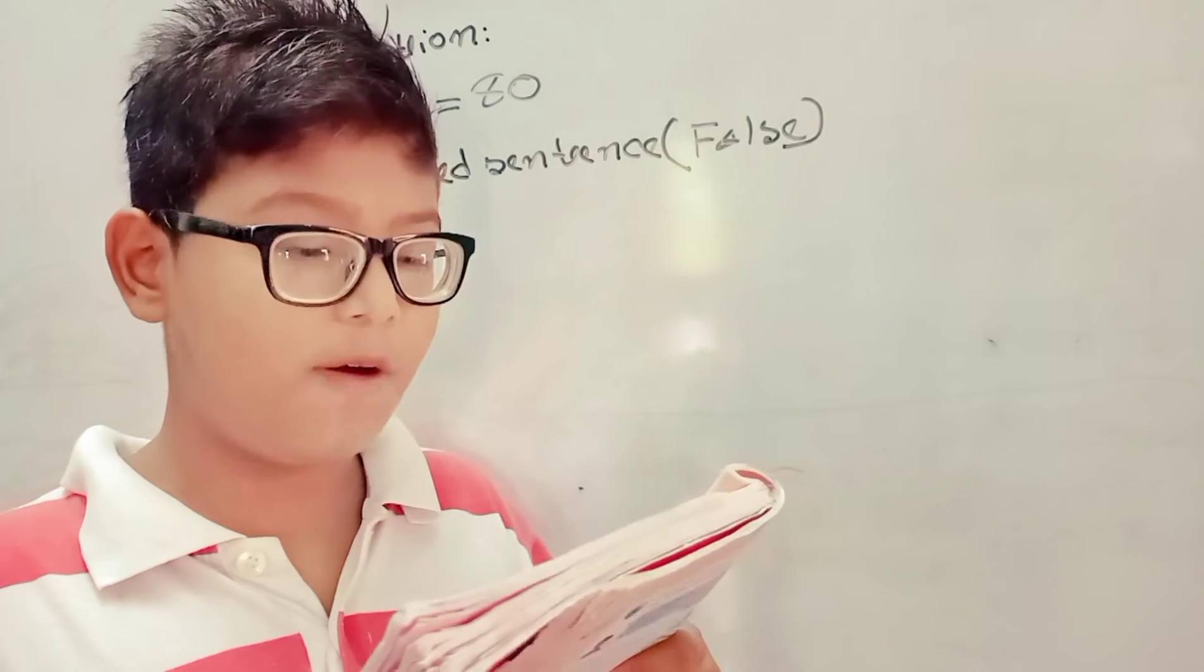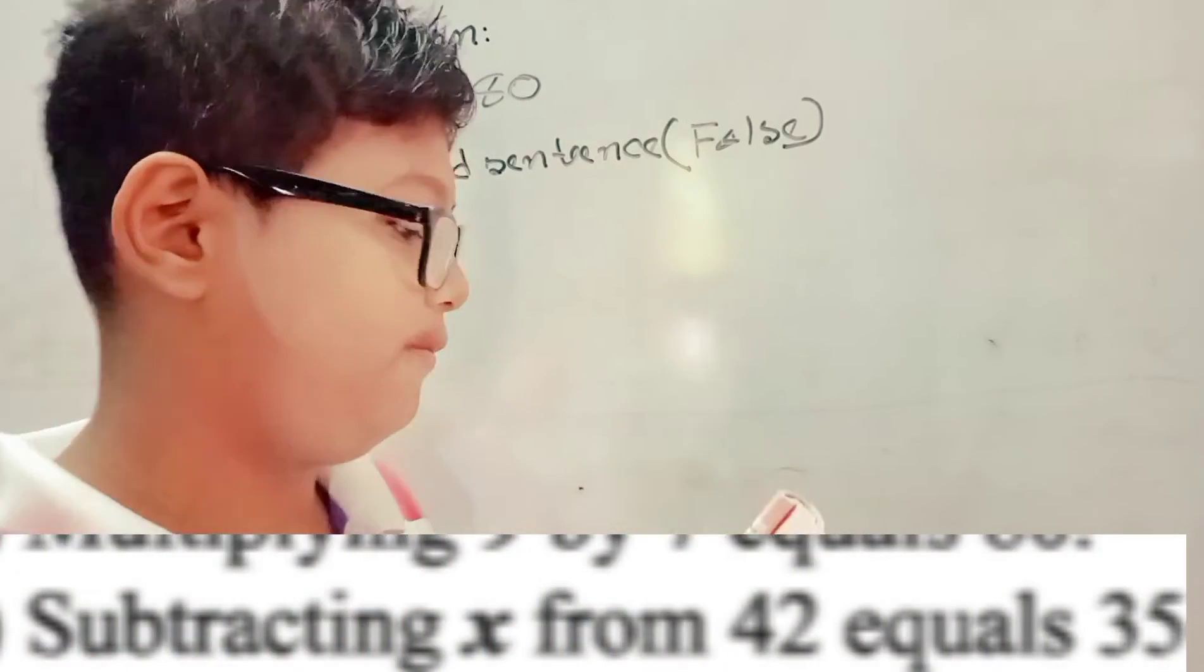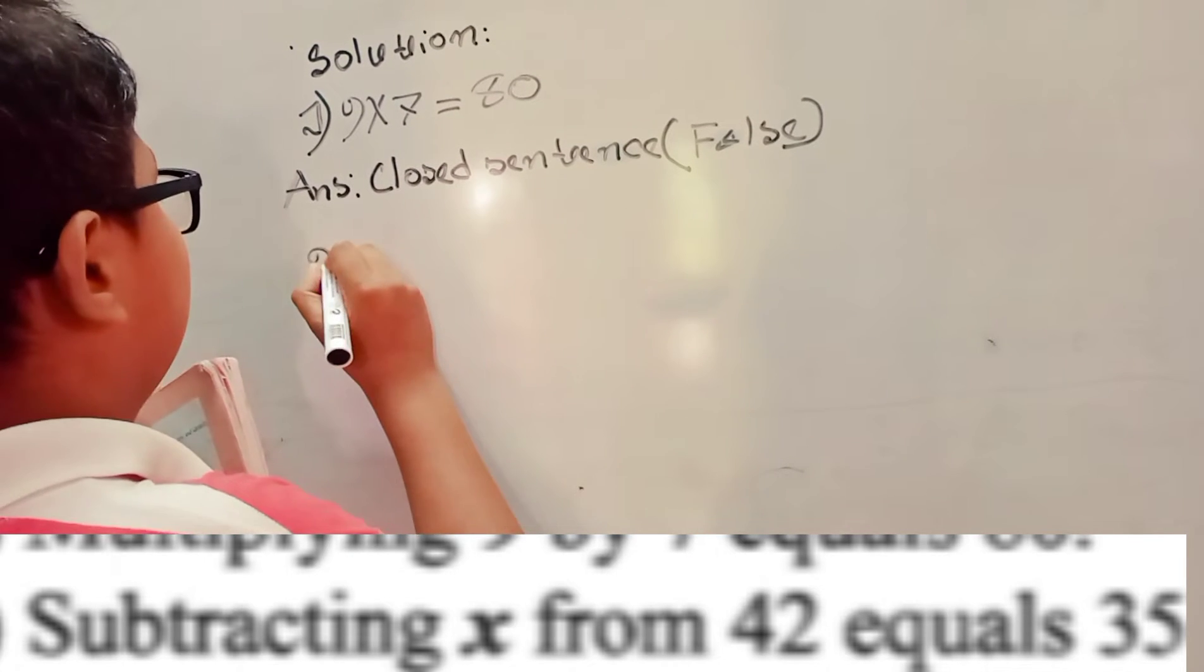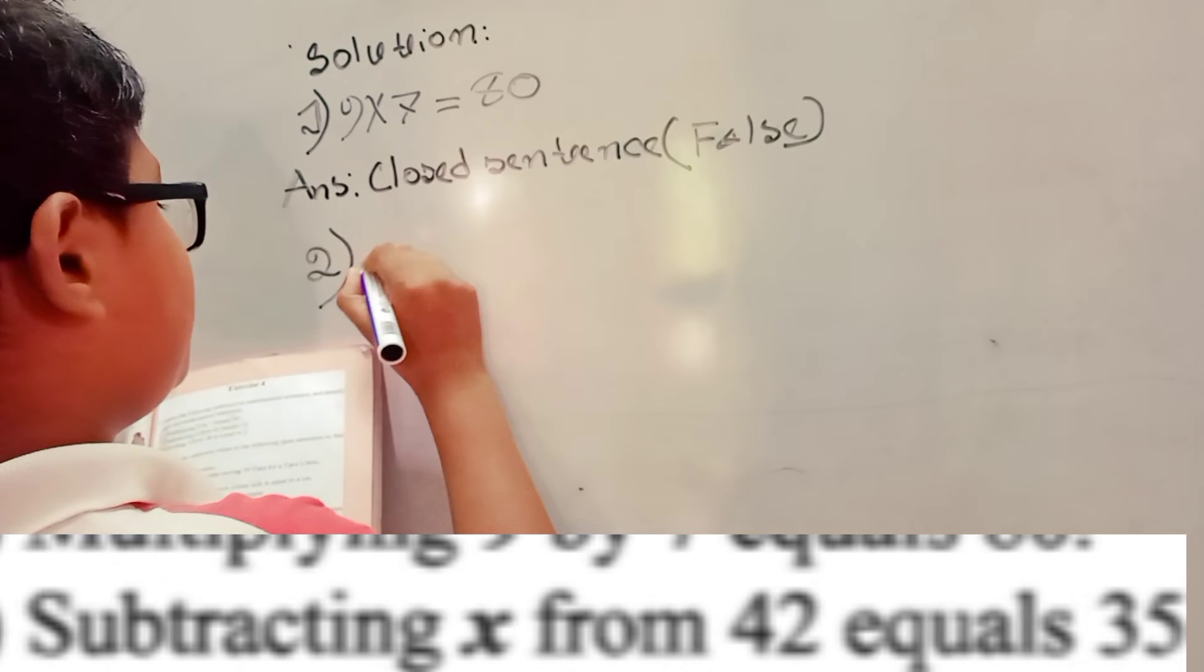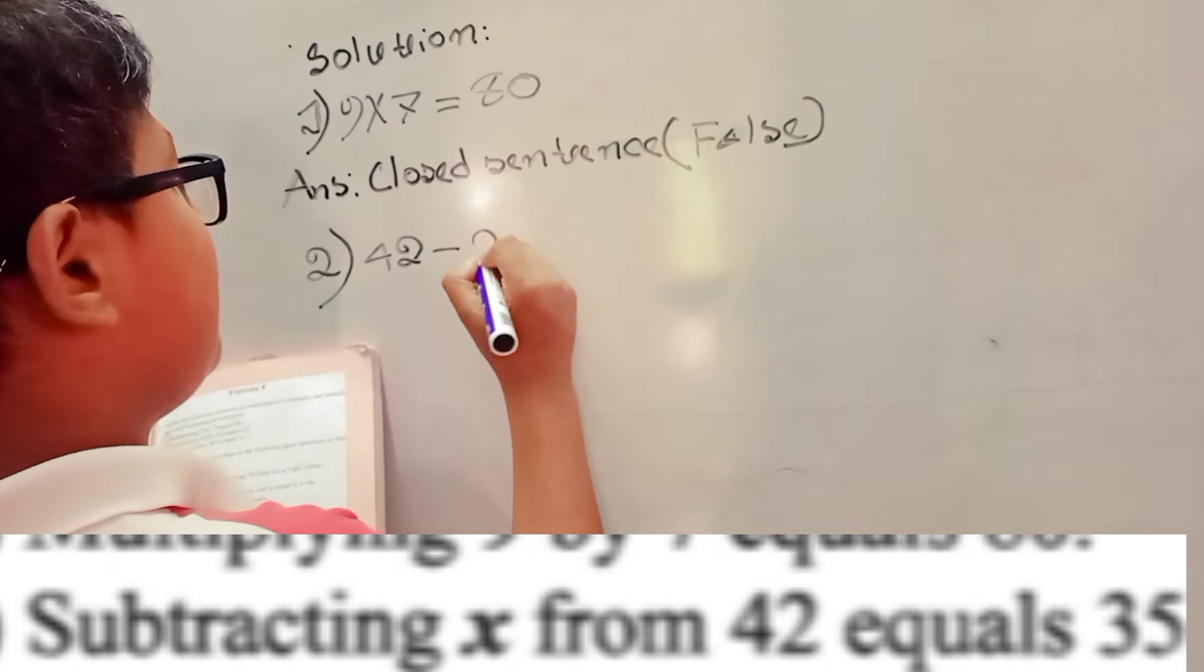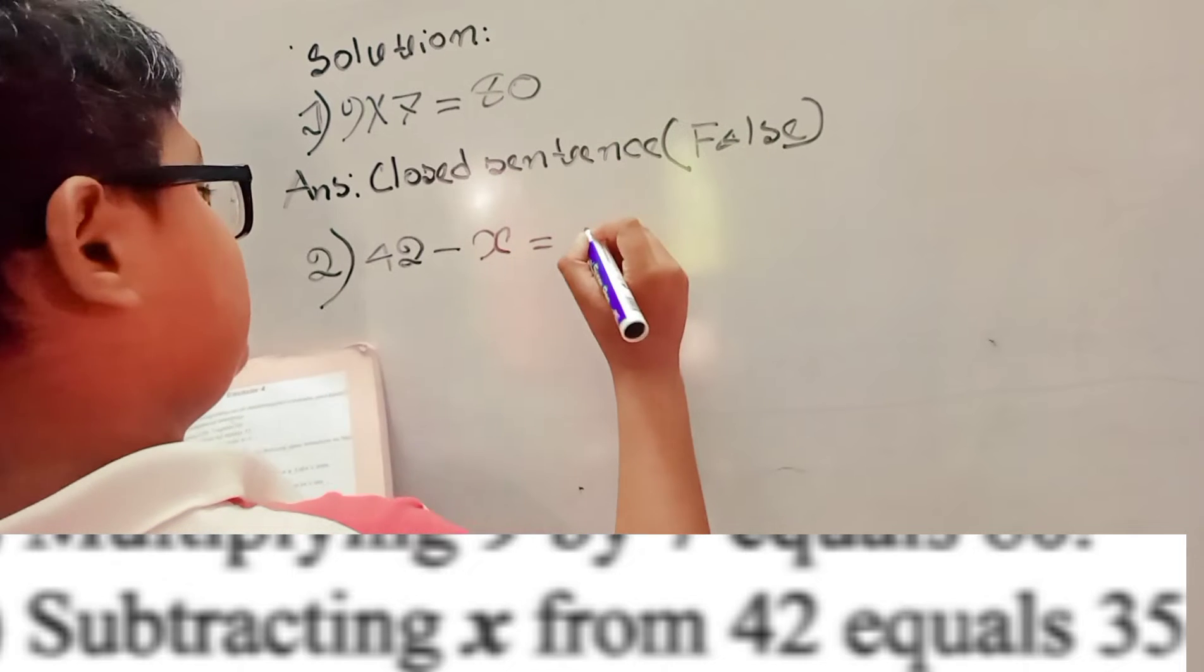Subtracting X from 42 equals 35. So we can write 42 minus x equals 35.